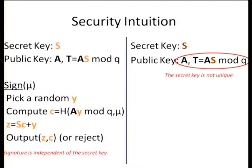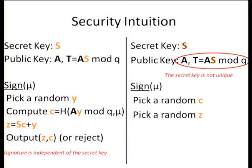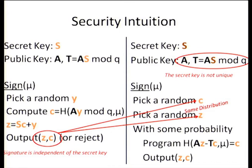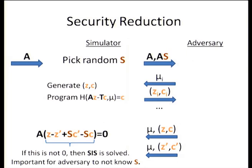Returning to the security reduction requirements: what if we replace the requirement that the secret key is not unique with the weaker requirement that it is only computationally indistinguishable whether the secret key is unique? In this hybrid game, you increase the value of S to an invalid secret key, give the public key T equals AS mod Q, and use programming of the random oracle to simulate signatures. The adversary either detects the invalid key, solving the low-density knapsack problem, or gives a forgery solving SIS.